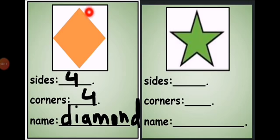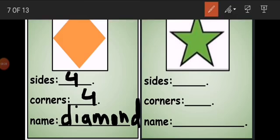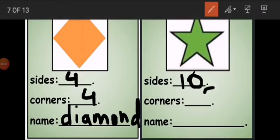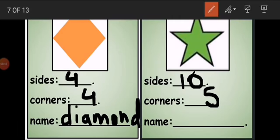Now look at this shape. Count its sides: one, two, three, four, five, six, seven, eight, nine, ten — this shape has ten sides and five corners. A flat closed shape with straight lines that has ten sides and five corners is called a star.